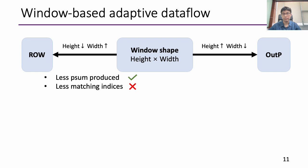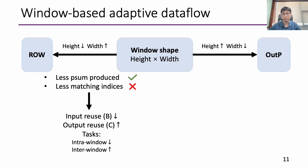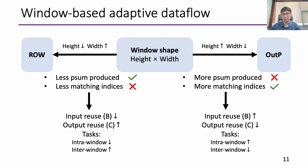When reducing height and increasing width toward row-based data flow, the partial sum latency is reduced and the cache pressure is alleviated. However, this leads to fewer matching indices being found in a window, meaning the reuse of input B decreases while the reuse of output C increases. On the contrary, by increasing the height, we approximate the outer product data flow, which produces more partial sums and matching indices. Since they have different data reuse patterns and task allocations, we can trade off between them to find the best fit.